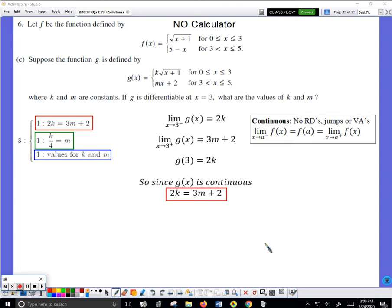Same FRQ, now we do part c. They say suppose the function g is given by this, where k and m are constants. G is differentiable, what are the values of k and m? As we've said all year, I should not pay attention to k and m, I should pay attention to other clues. I remember problems we practiced where to determine that g is differentiable, I need this note.